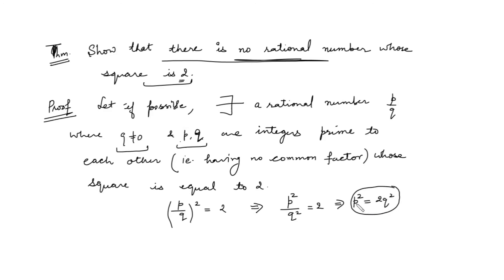Now clearly, if P is an integer and Q is an integer, then P square and Q square are both integers. And if you can write P square as twice times Q square, then clearly P square will be divisible by 2. P and Q have no common factor, so you cannot divide P square by Q square. Therefore, if P square equals 2 times Q square, P square is clearly divisible by 2.